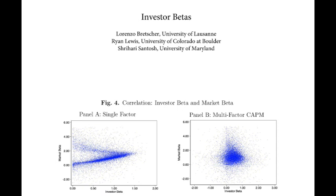Here's a preview of the results. If I take this investor beta measure and sort into portfolios, what I end up with is what we'd have wanted the CAPM to look like. As we increase investor betas, we get higher excess returns, and the slope of this line is about 6%. That's going to be the main point of this paper — if there's one takeaway, it's this picture.